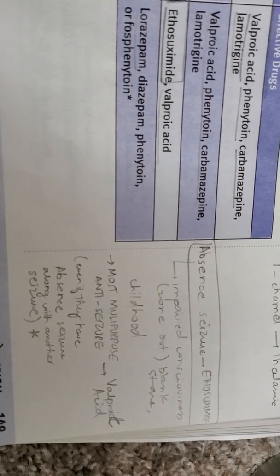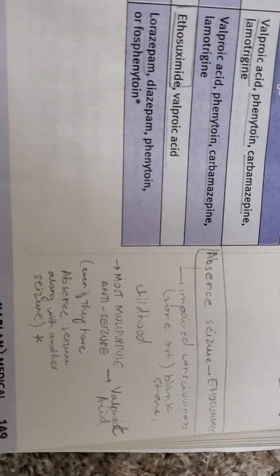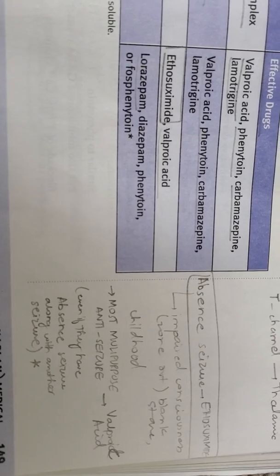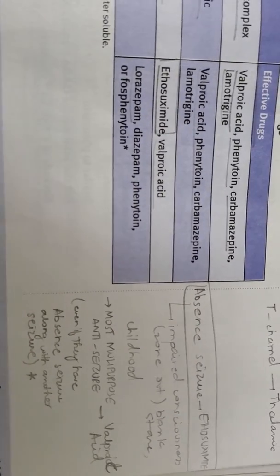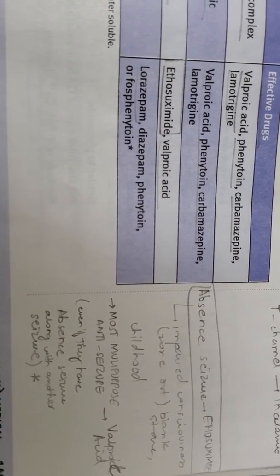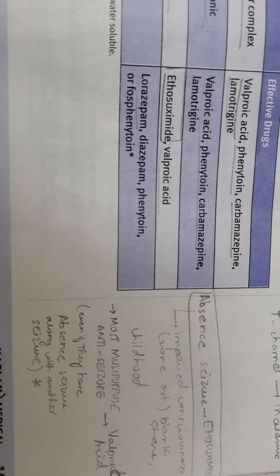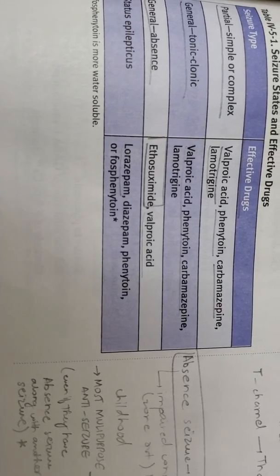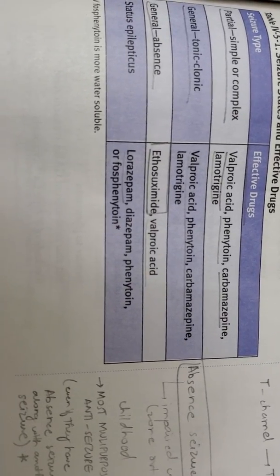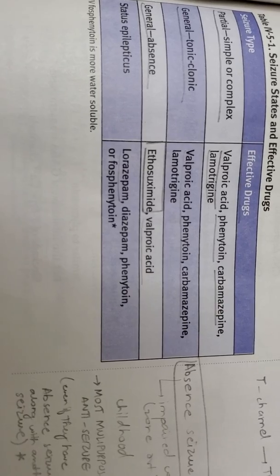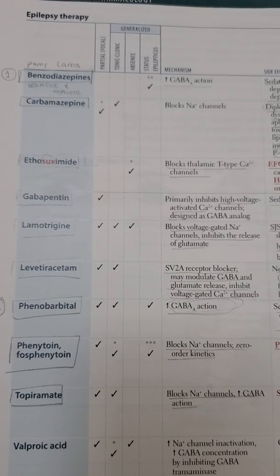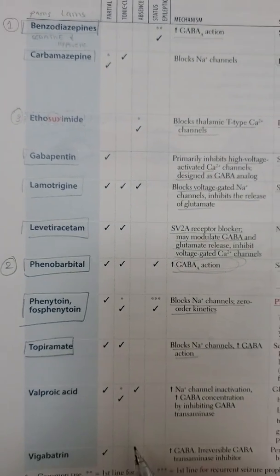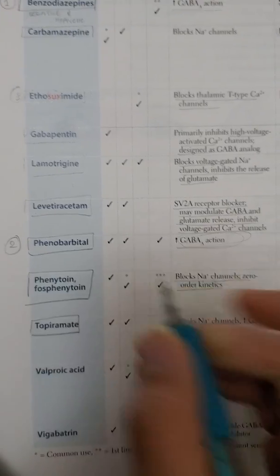If a question says a child is having an absence seizure along with another seizure, we always give valproic acid, because valproic acid is also indicated for absence seizures. But if it's only an absence seizure, we use ethosuximide. The fourth drug we will discuss is phenytoin.